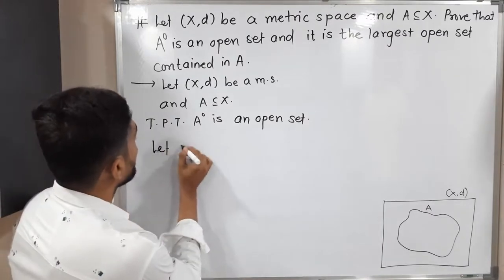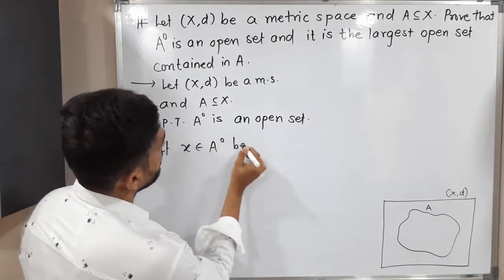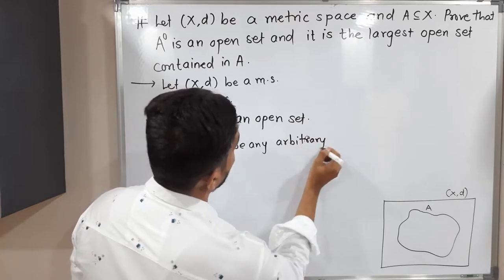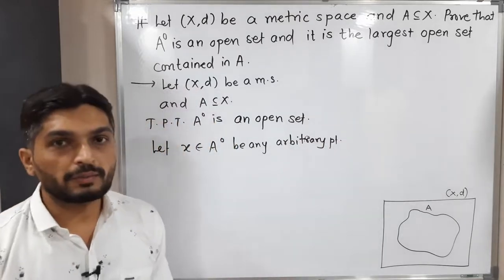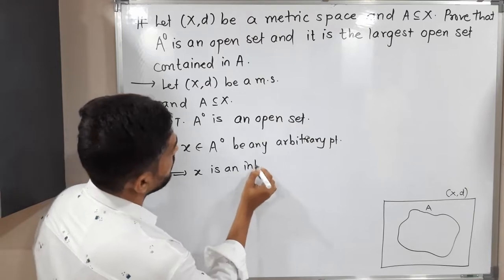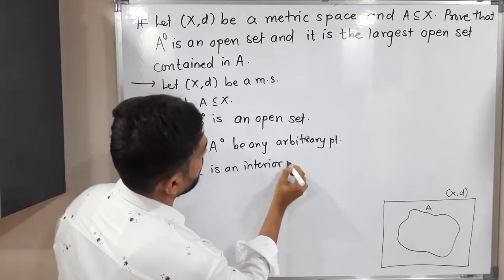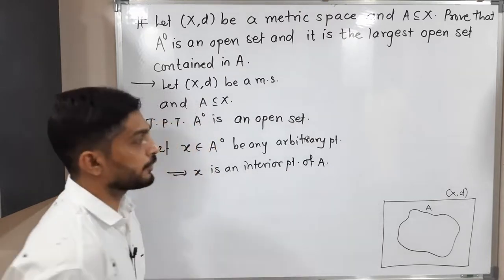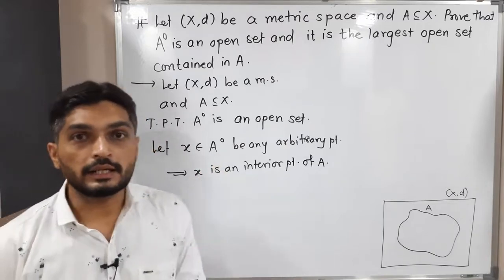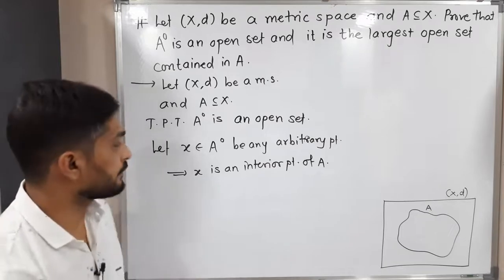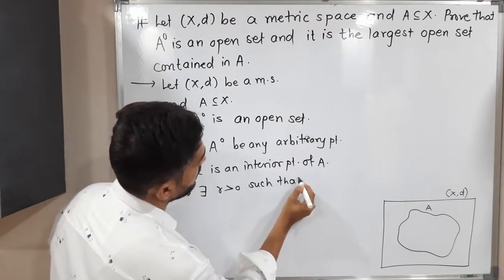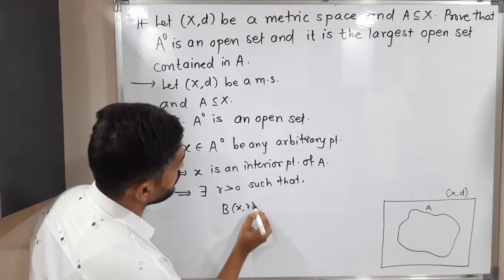So let us take one arbitrary point. Let x belong to A interior be any arbitrary point. So I have selected one point from A interior. This implies x is an interior point of A. Since A interior means the collection of all interior points of A, and x belongs to that set, that means it is an interior point of A. So by definition of interior point, there exists r greater than zero such that B(x, r) is a subset of A.